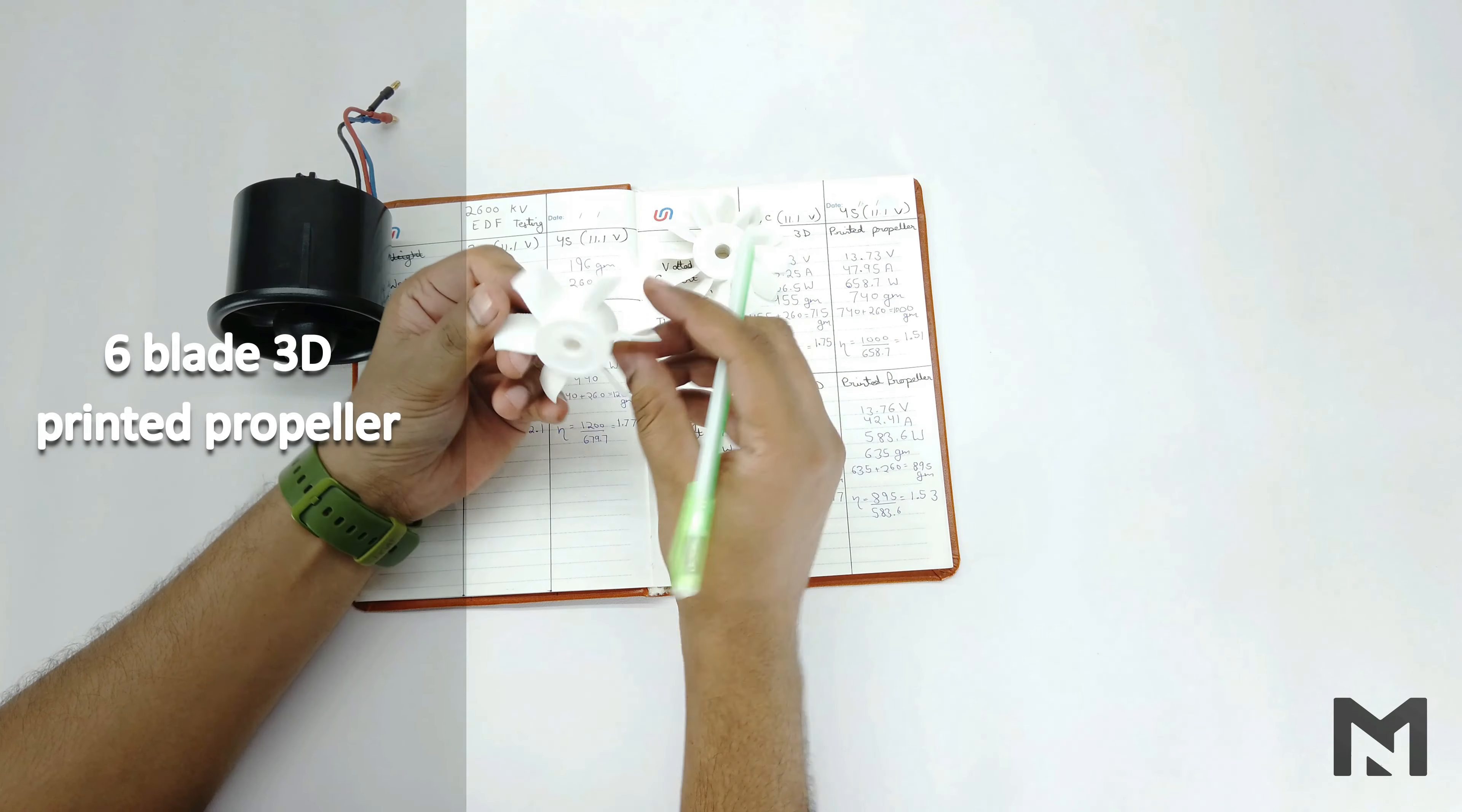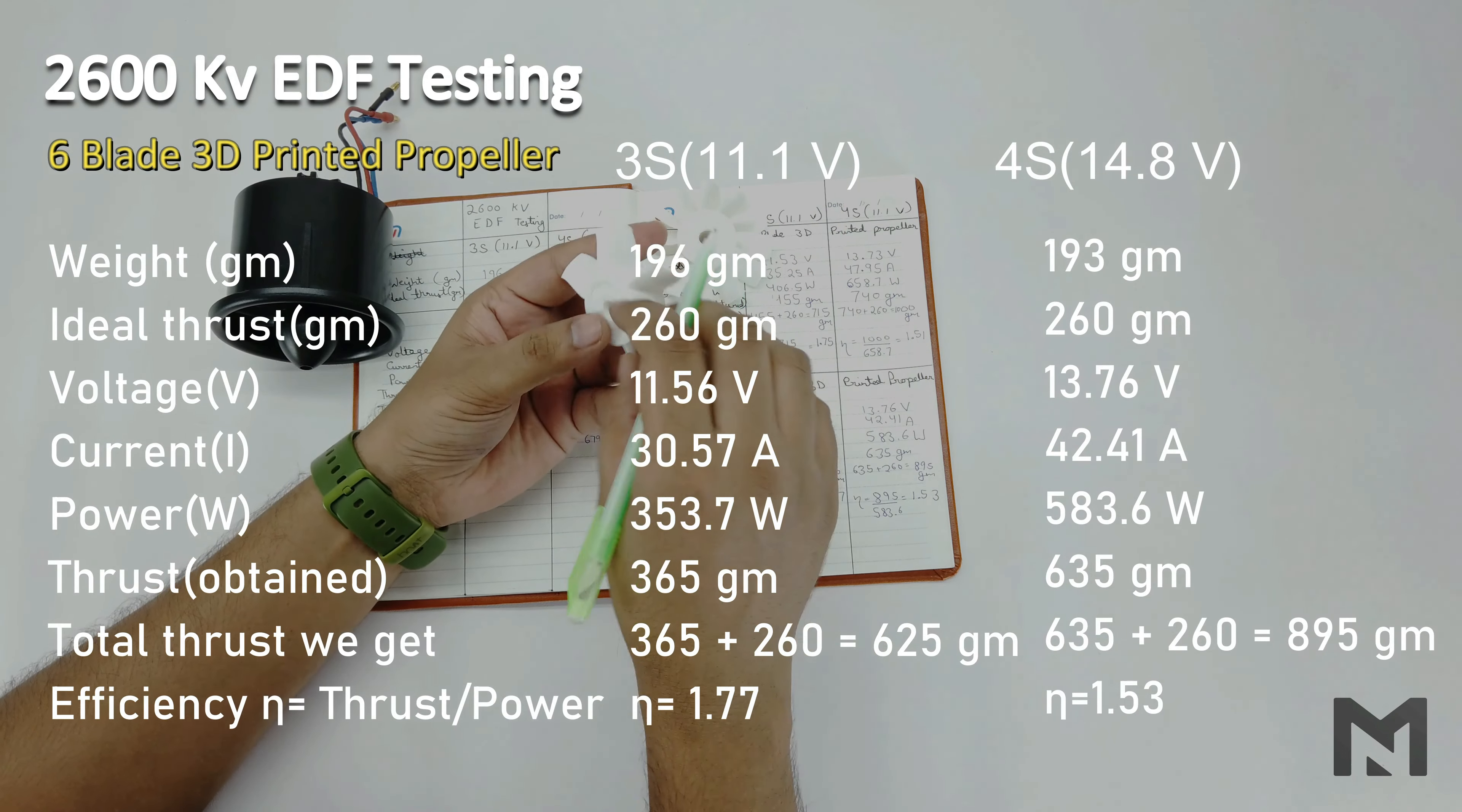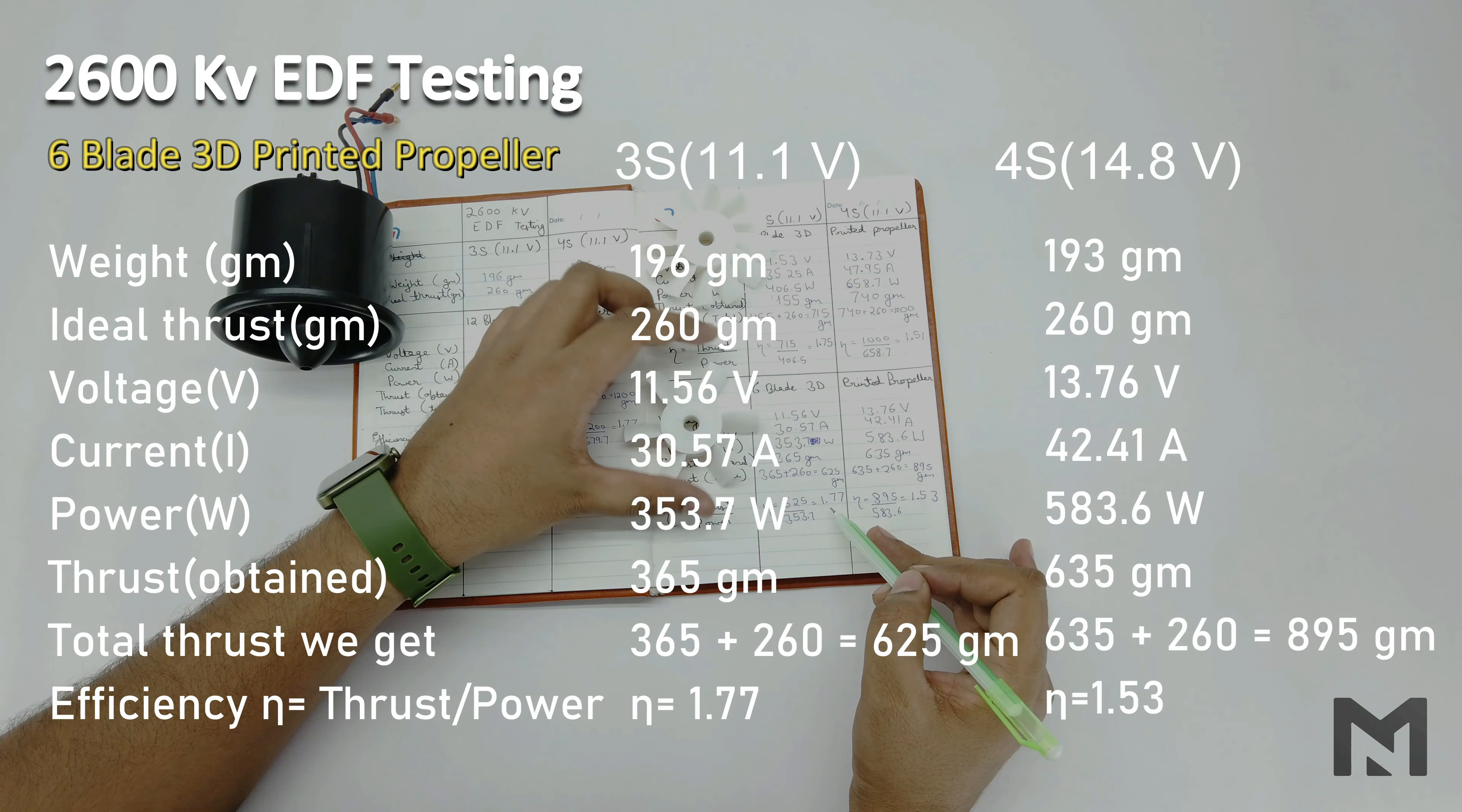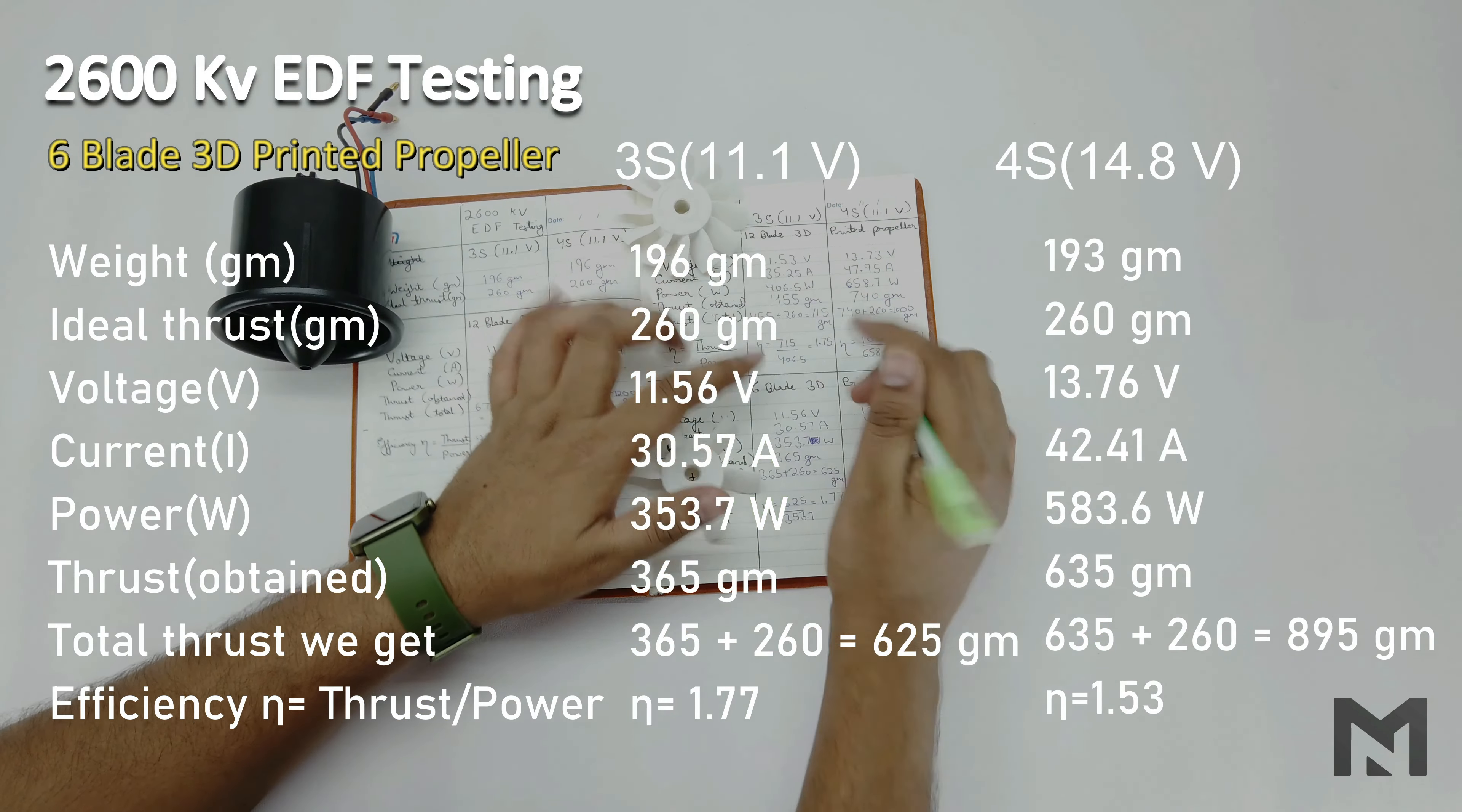Now when we connected the 6-bladed propeller, we got around 625 grams at an efficiency of 1.77 on 3S battery. It was vibrating a lot and I knew it wouldn't give much thrust. Because of the vibration, a lot of energy got lost. At 4S, it gave the thrust of 895 grams at an efficiency of 1.53.